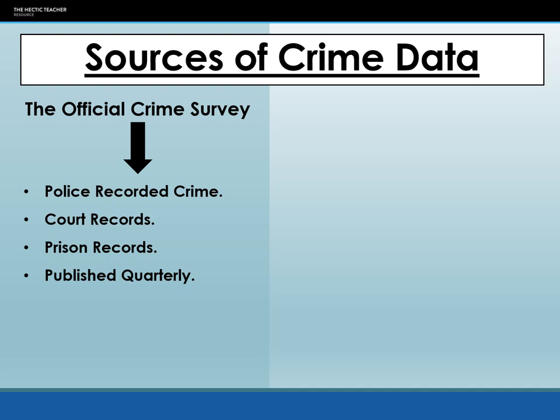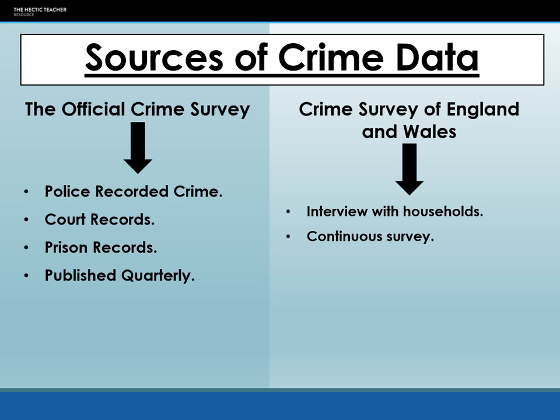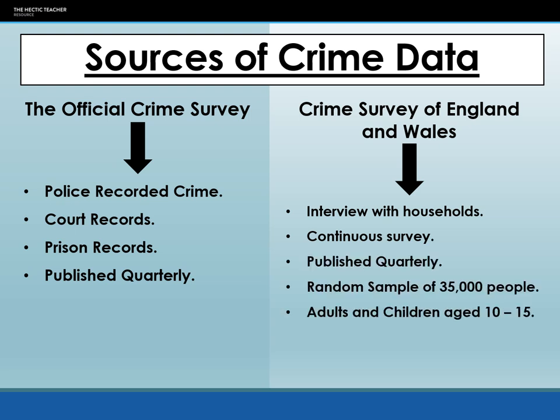The other type of crime data comes from the Crime Survey of England and Wales, which used to be known as the British Crime Survey. Once they lost their official statistics status, they rebranded. This is a continuous survey — it's ongoing throughout the year — and it is a victim or self-report survey. They send out a letter asking people if they have been a victim of crime, and if the household says yes, they will then interview that person either via video call, telephone call or in person. It's a random sample of 35,000 people annually.